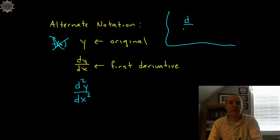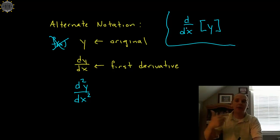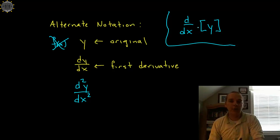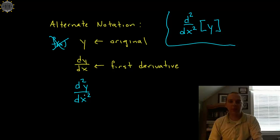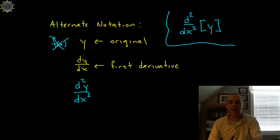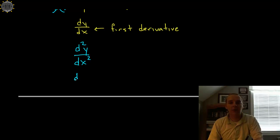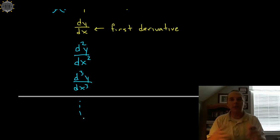Using this notation you can say the second derivative with respect to x. If you move the y up into the numerator, you can see where this notation comes from — it's the second derivative with respect to x of this expression, meaning we're going to differentiate it two times. In the same way, just keep going for the third derivative of y with respect to x, and so on and so forth — we never make any changes to that pattern.